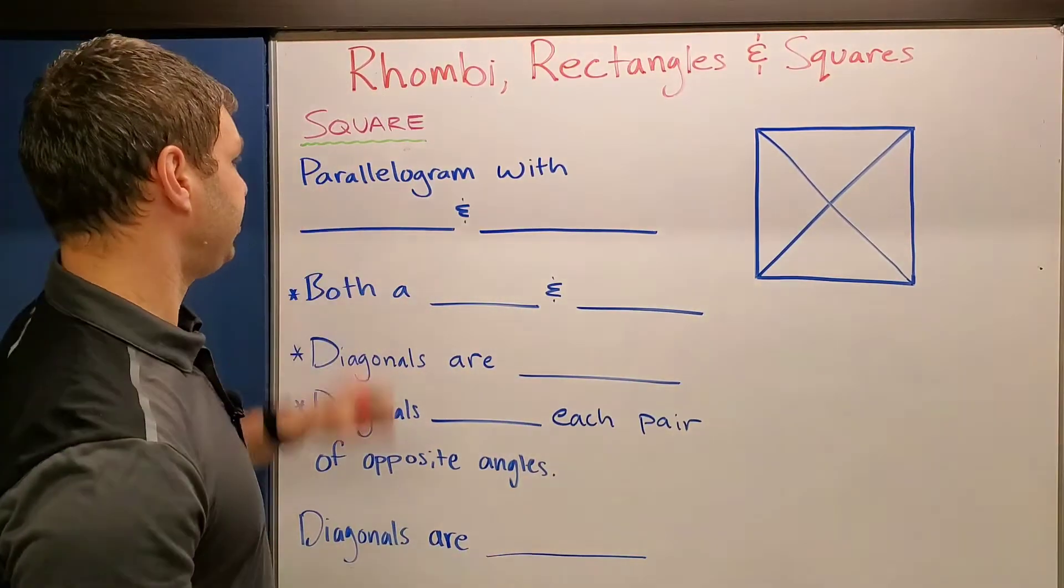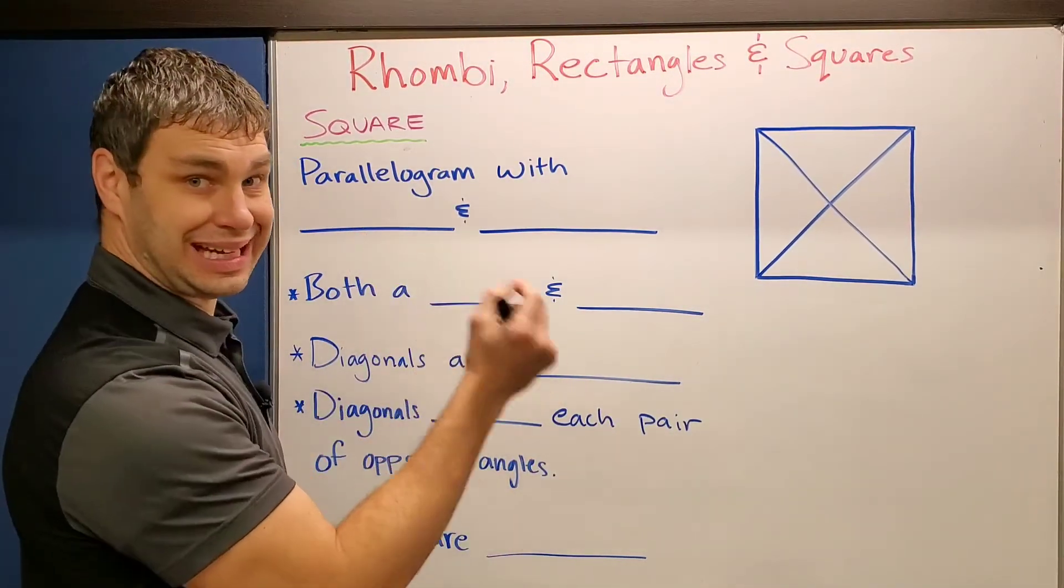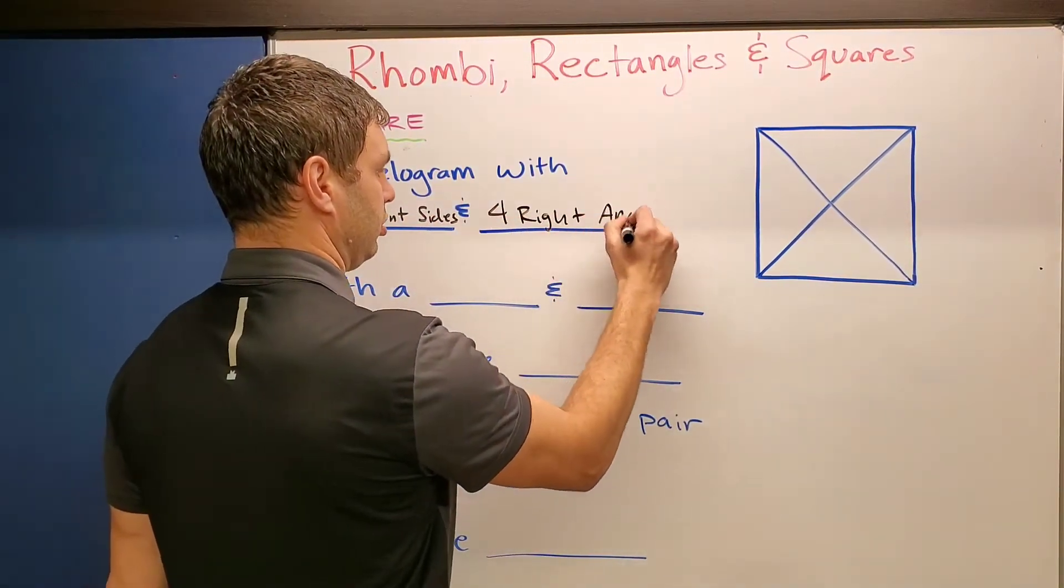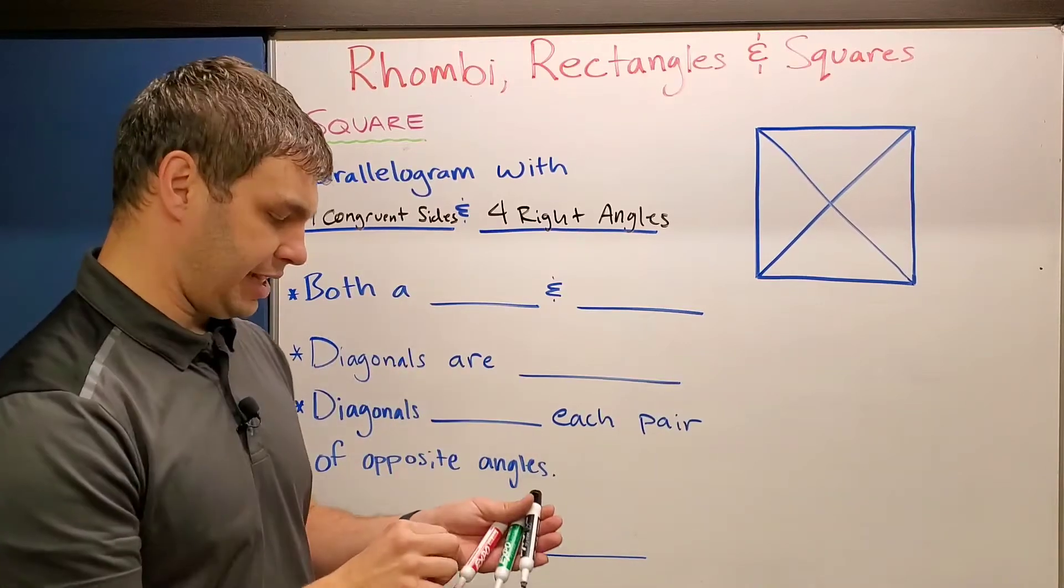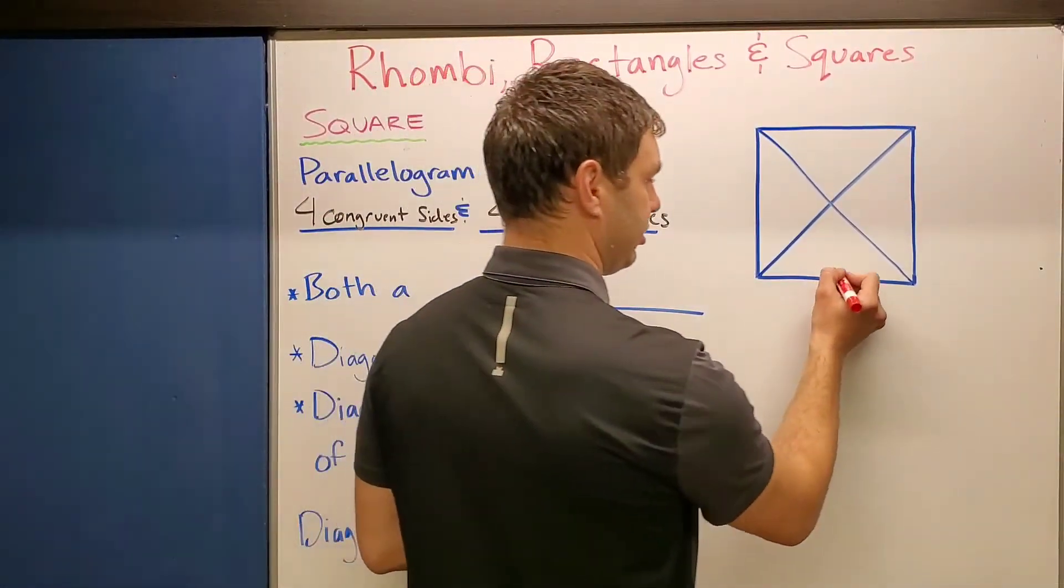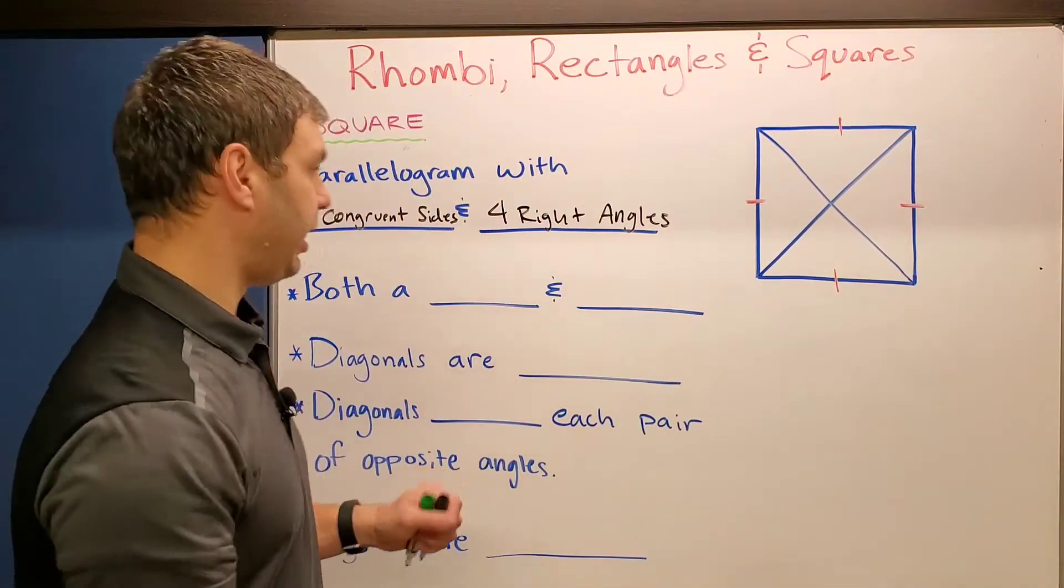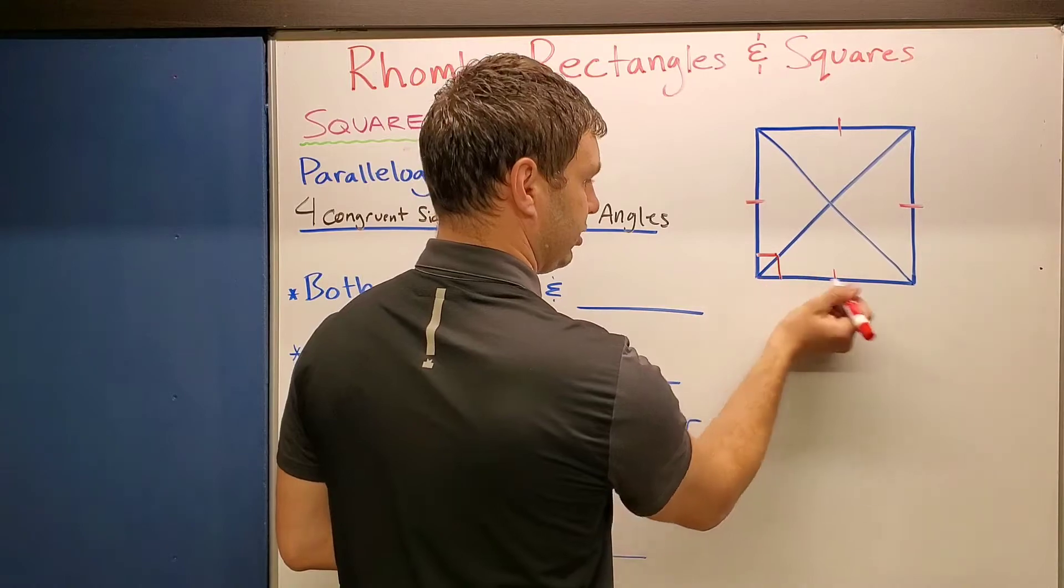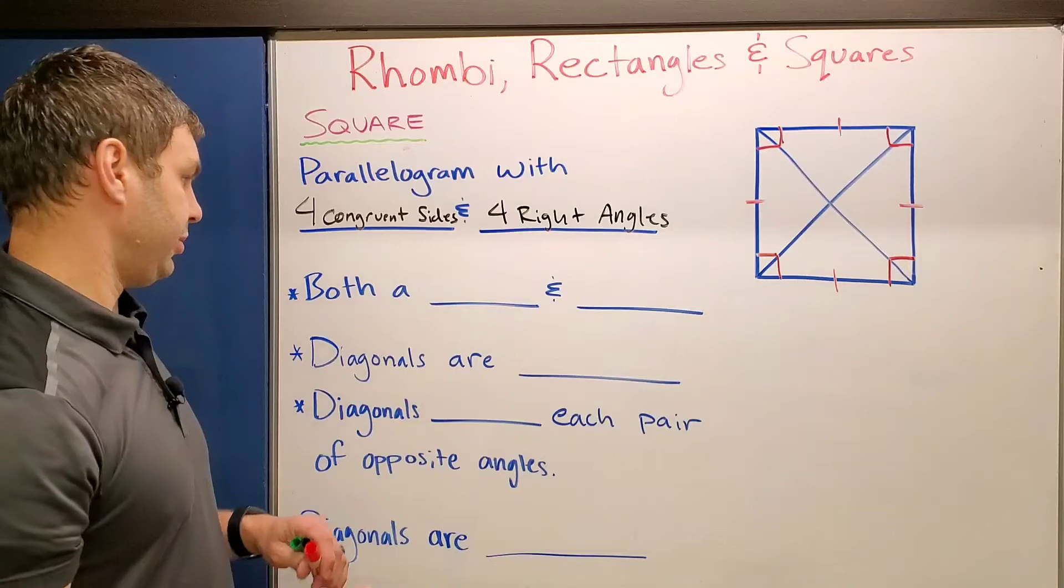Alright. Then last shape we have here is a square. This is a parallelogram with both four congruent sides and four right angles. So the way I'll mark that up on the picture over here is I'll start with the four congruent sides, give each side a tick mark to show those are congruent, as well as the four right angles. Again, I can kind of put those in the corners like this.